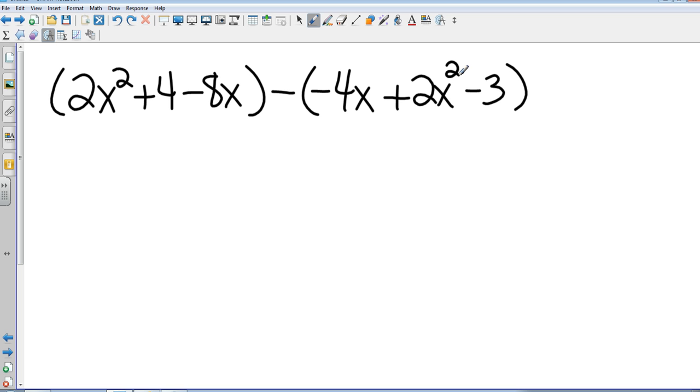So I'm going to rewrite this and that's going to be plus 4x minus 2x squared, and then minus a negative 3 is going to be plus 3.